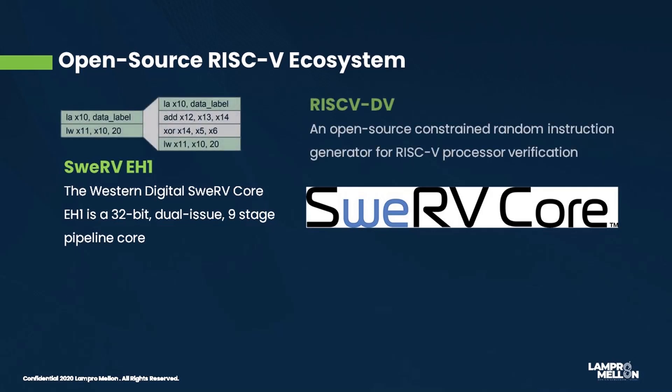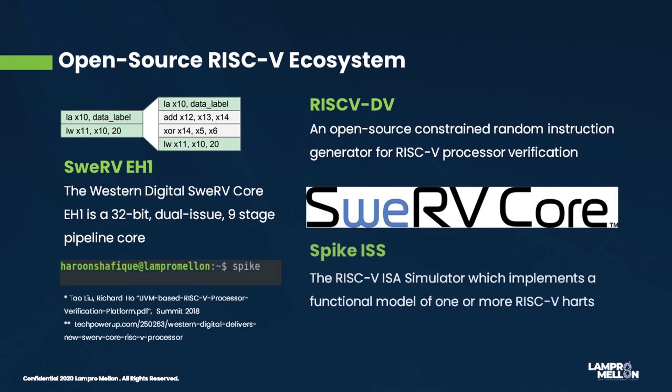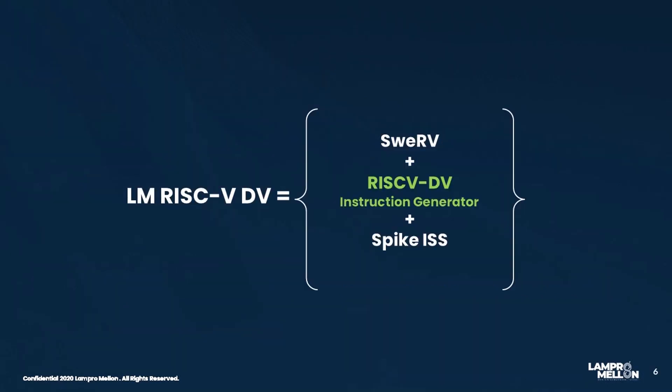Integrated with this SweRV core is the RISC-V DV instruction set generator from Taolu, which was presented at the summit in 2018. It's a UVM-based instruction stream generator which provides cool features like randomization of page table, interrupt handling, etc. For the golden reference model, we use Spike ISS from RISC-V International. LM RISC-V DV combines these three IPs and tools into an integrated design and verification environment.